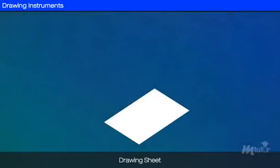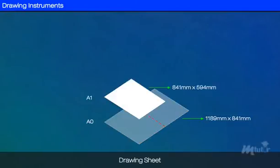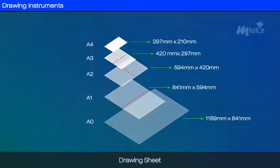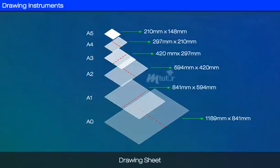Next is the drawing sheet. Drawing sheets are available in many varieties, and good quality paper with a smooth surface should be selected for drawings to be preserved for longer periods. Sizes recommended by the Bureau of Indian Standards (BIS) are: A0: 1189×841mm, A1: 841×594mm, A2: 594×420mm, A3: 420×297mm, A4: 297×210mm, and A5: 210×148mm.